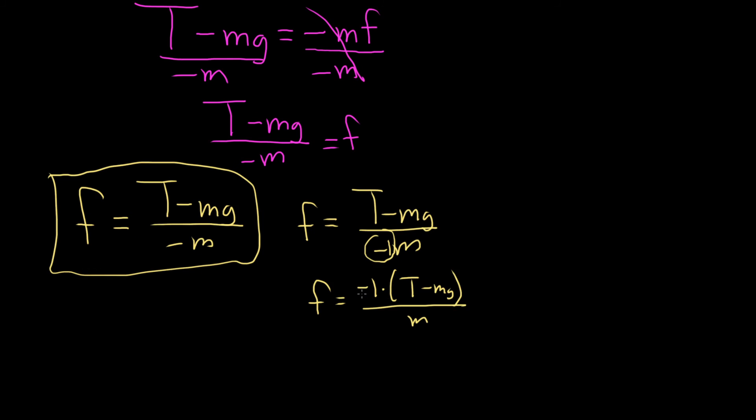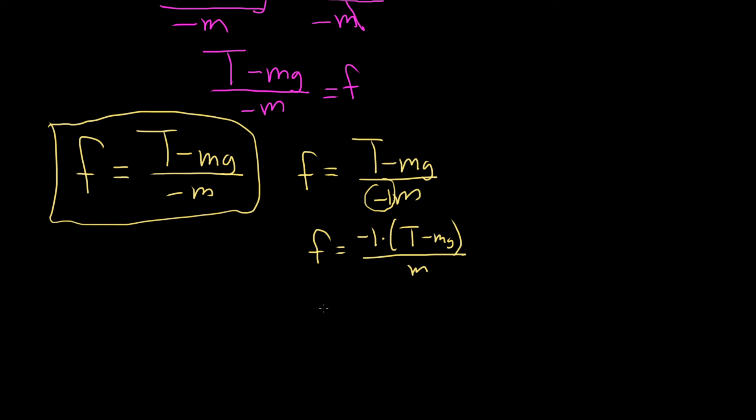But when you do, you do have to leave it on the outside. So now we can distribute that negative 1. So it'll be negative T plus mg over m.